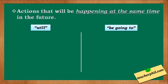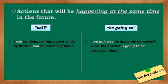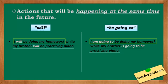The last use is for actions that will be happening at the same time in the future. Example: 'I will be doing my homework while my brother will be practicing piano.' Or: 'I am going to be doing my homework while my brother is going to be practicing piano.' Both actions will be happening at the same time.